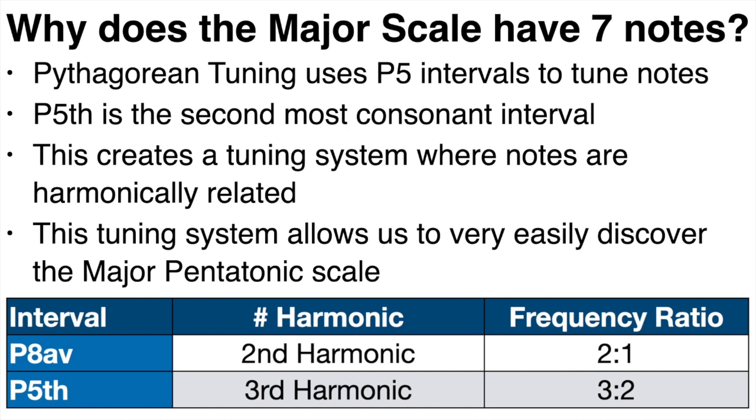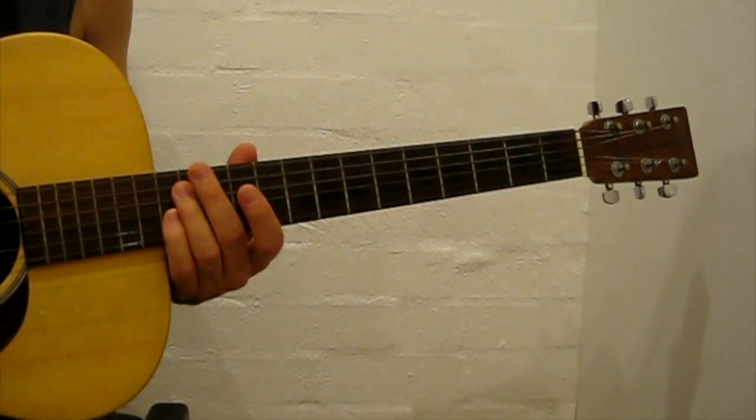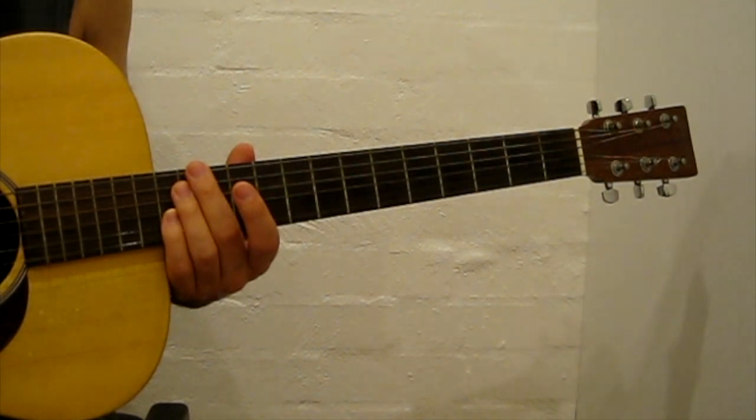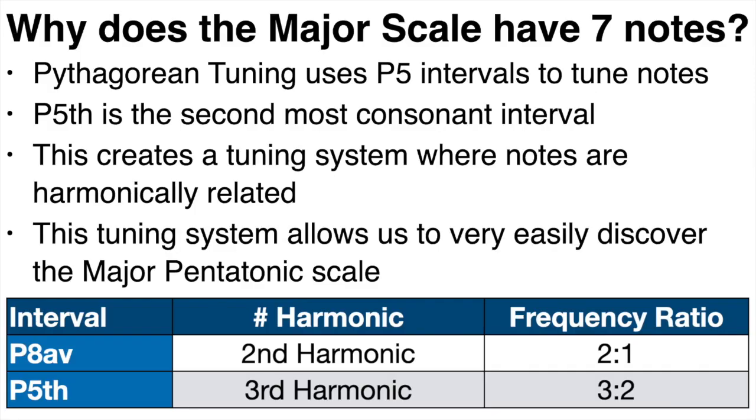First, let's quickly revise the frequency ratios of the two most important consonant intervals. The perfect octave has a ratio of two to one, and the perfect fifth has a ratio of three to two. Now, it's very easy to find these harmonics on a guitar. The second harmonic is located above the twelfth fret and creates an octave interval with the open string. And the third harmonic is located above the seventh fret and creates a perfect fifth interval with the open string.